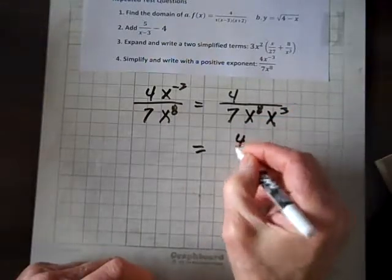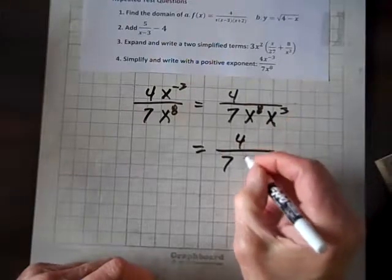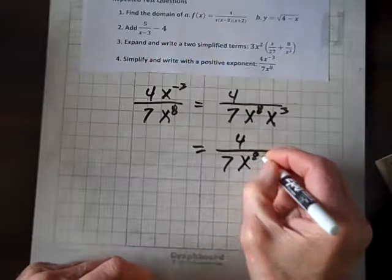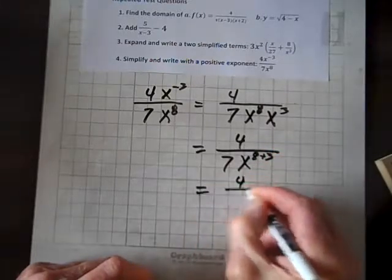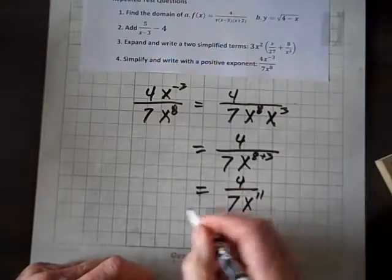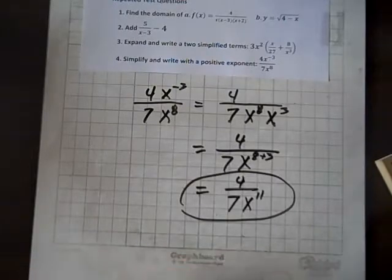And so now we have 4 over 7, and we simply add the exponents, x to the eighth plus three, which equals 4 over 7x^11. And we're done. And those questions are on just about every test.